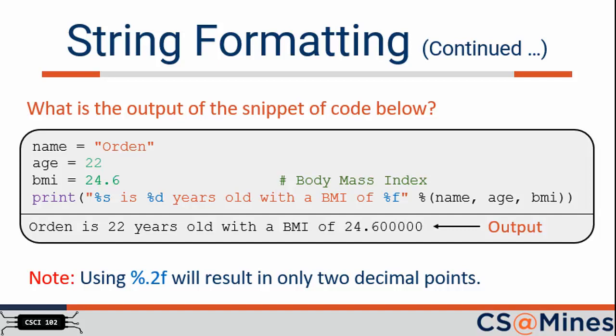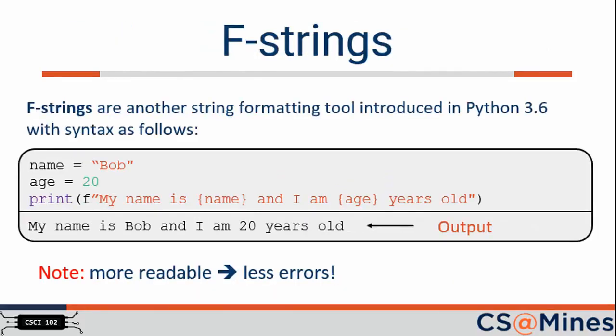Fstrings are a new string formatting tool that were introduced in Python 3.6. Here we show our previous print bob and age example, but this time we are using fstrings. Notice the f before the my name is string, and the braces with the variable names, which indicate where to print that variable. This way of string formatting is commonly used because it's more readable. And more readable usually means fewer errors, and that's a good thing.